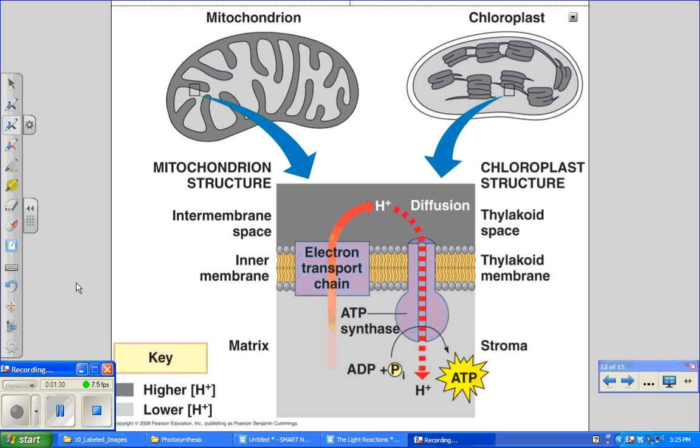One more thing we want to talk about before we leave the light reactions is chemiosmosis. Chemiosmosis is an energy coupling mechanism that uses energy stored in the form of a hydrogen ion gradient across the membrane to drive cellular work. We've learned about this when we learned about co-transport using a hydrogen ion gradient, but this is different here because this is being used to generate ATP.